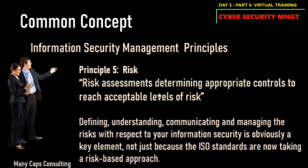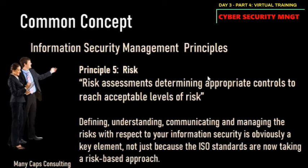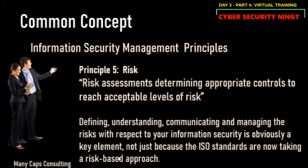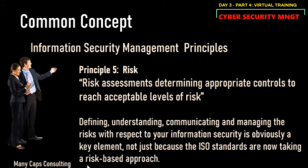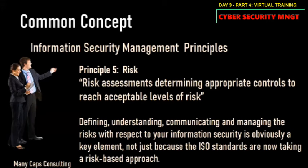Principle number five is risk. Risk assessment involves determining appropriate controls to reach acceptable risk levels. By identifying possible risks, we have a guide for what controls to work on — the most applicable, high-impact controls to solve those risks. ISO standards always use a risk-based approach. It is very proactive — it tries to identify problems before they occur, and if they do occur, identifies possible mitigations. This is the plan-do-act scenario of ISO.